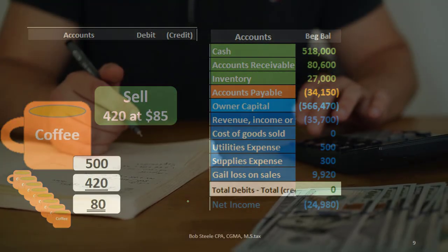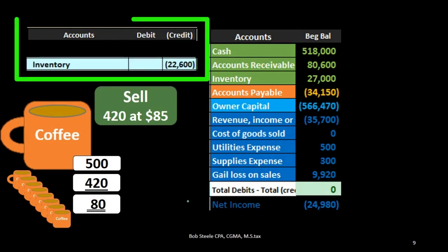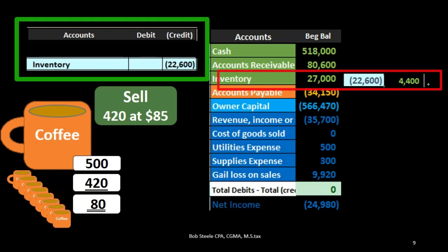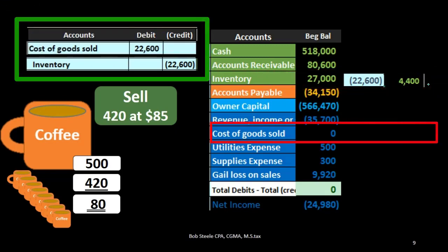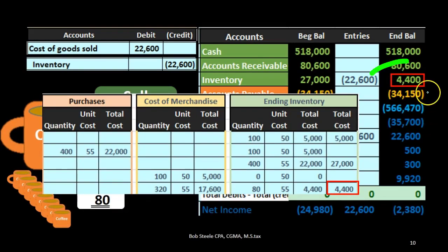Here is the journal entry for the cost of goods side of the sale: inventory goes down by $22,600, so we credit inventory, bringing it down to $4,400. Cost of goods sold — the expense related to using inventory to generate revenue — is debited for $22,600. We can see that the $4,400 remaining in inventory now matches what is in our worksheet.